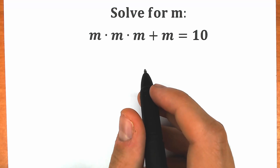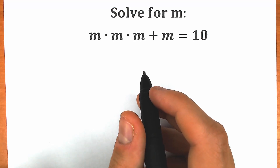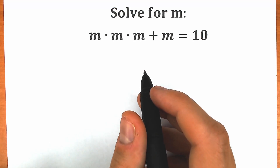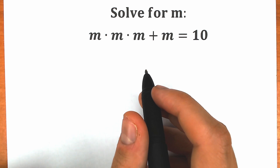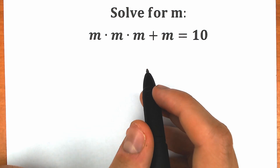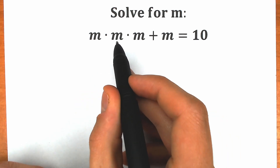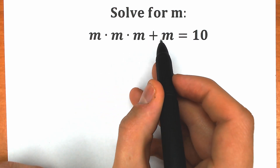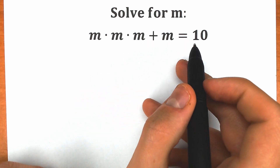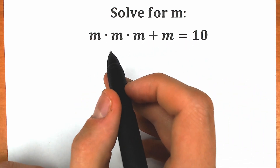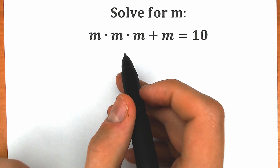Hello everyone! Happy to see you here on my channel HiMathematics! Today we have a very interesting and also very tricky question from a math interview. We have m times m times m plus m equal to 10, and we need to find m.